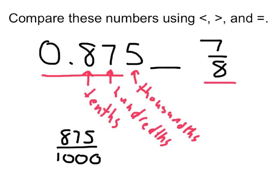Well, I can see that this needs to be simplified. Divide by a hundred and twenty-five, and I find out that eight hundred and seventy-five thousandths is actually the same as seven eighths. The appropriate symbol is the equal sign. These two are actually equal.